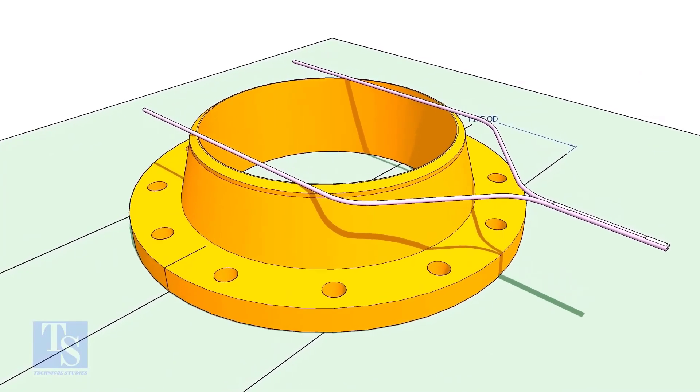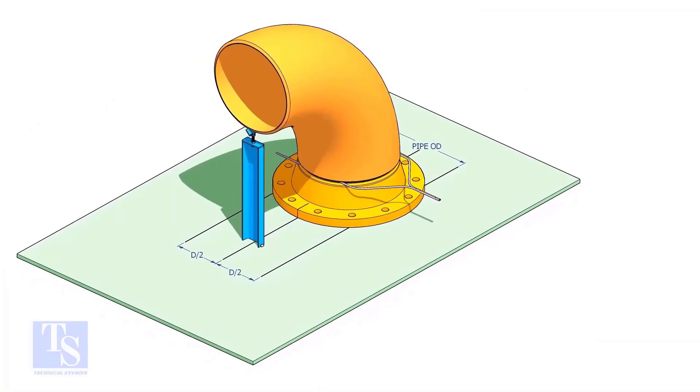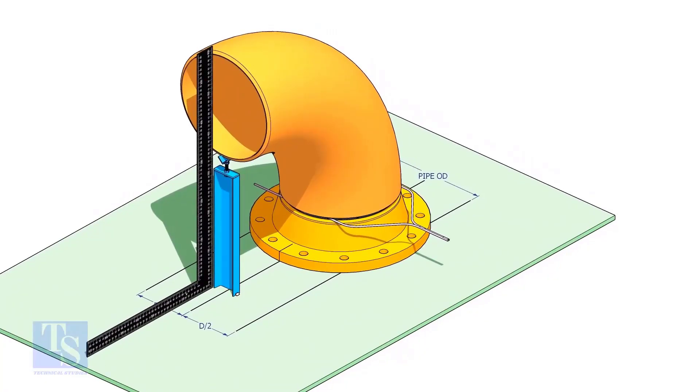Put the gap rod and elbow on the flange. If required, make an adjustable support to hold the elbow in vertical position. Make the squareness of the elbow to the plate.